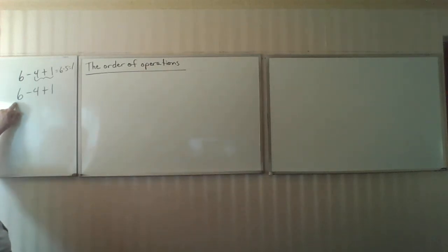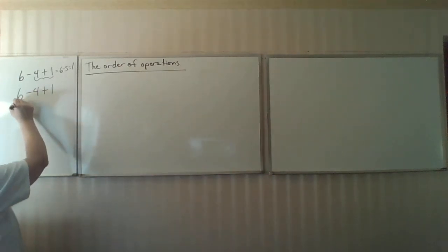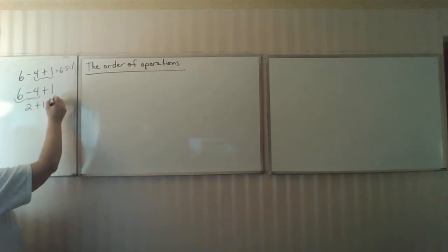Other people will say, I've heard you always have to go from left to right. So I'm going to go 6 minus 4, which is 2, add 1 to my 2, and I'm going to get the number 3.